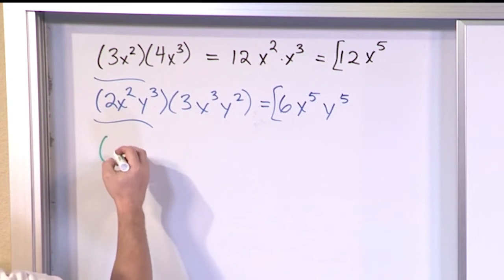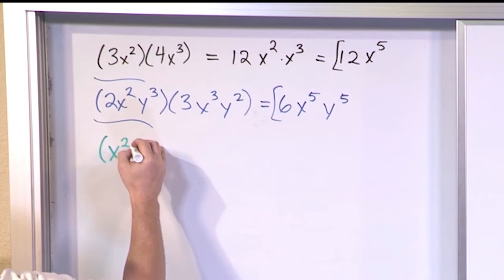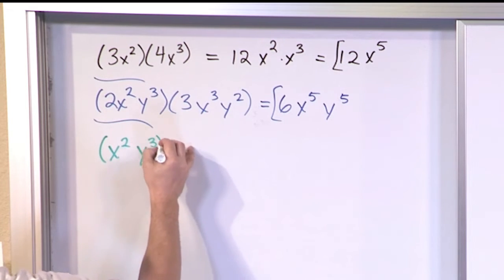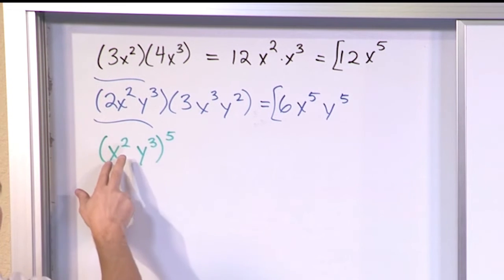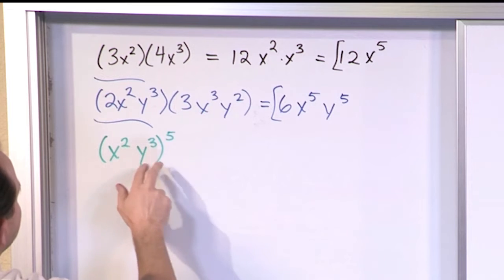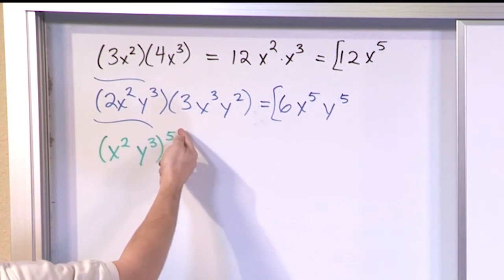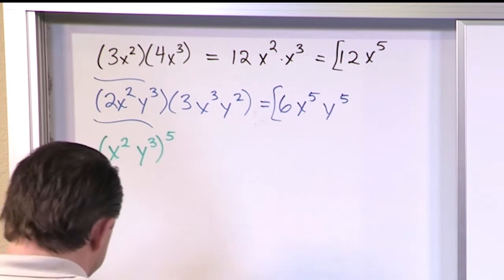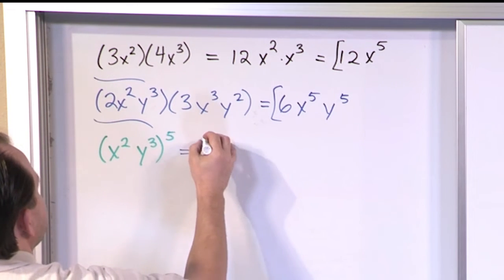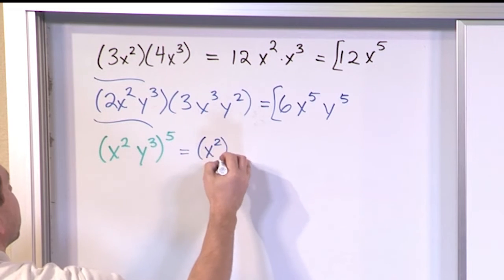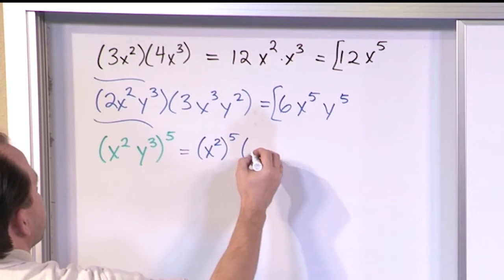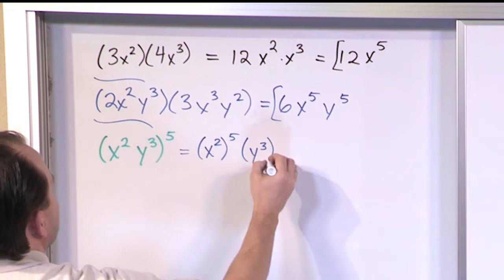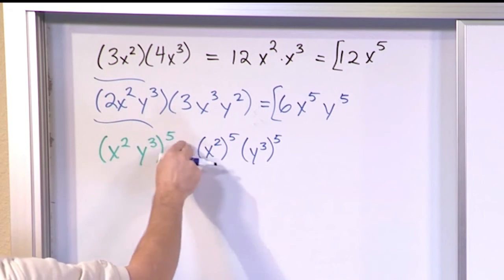Now what if we had (x²y³) all raised to the fifth power? And we've done problems like this before. We have two things going on here. First, we have two items in the parentheses and we have the exponent there. So the exponent is going to be applied to each of the terms inside. So we have x² raised to the fifth power times y³ also raised to the fifth power because it applies to each guy.